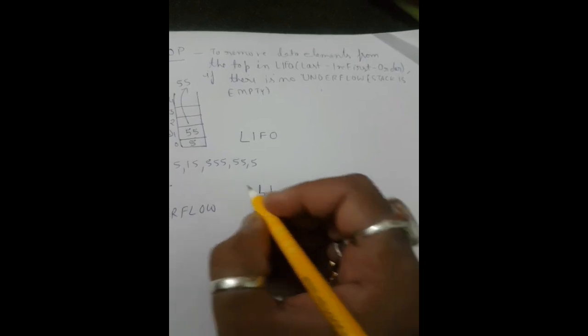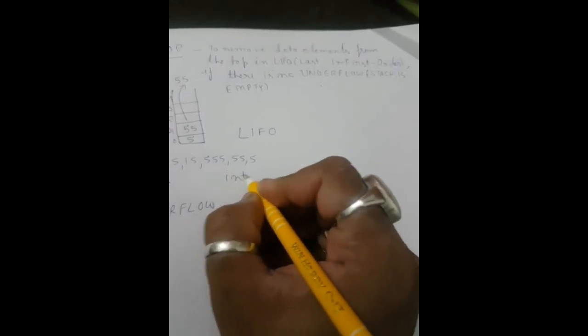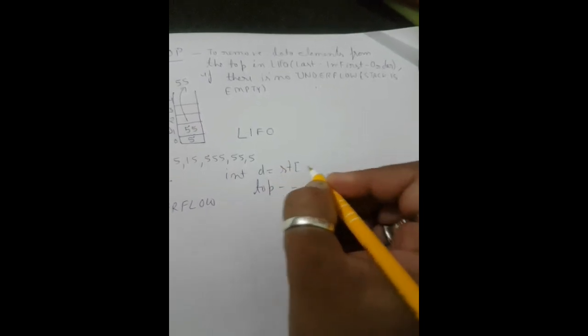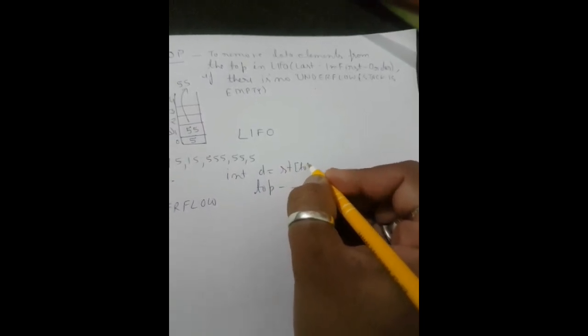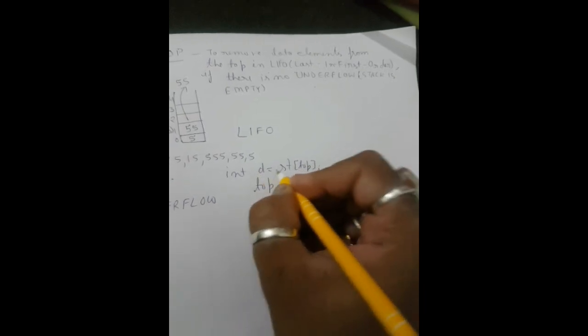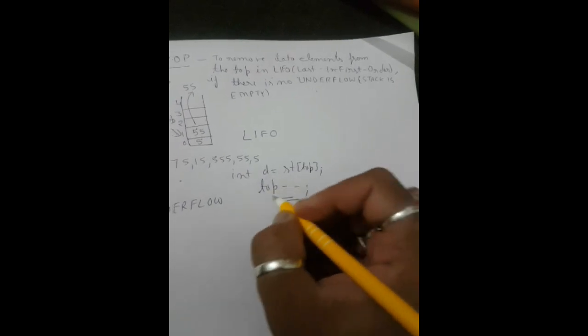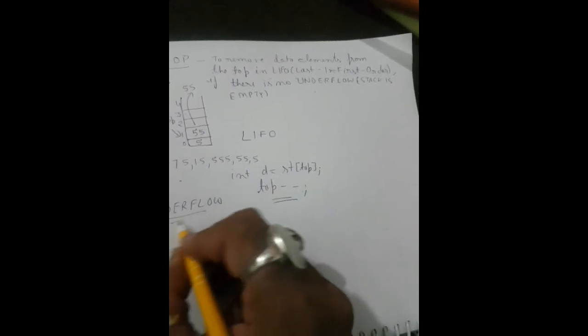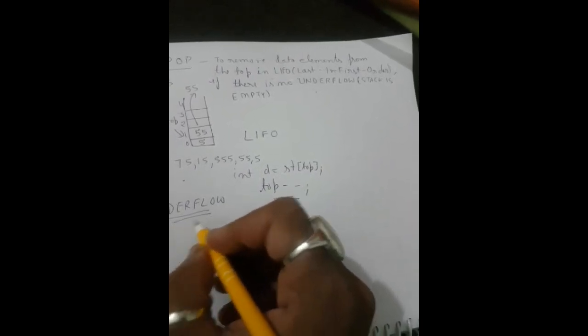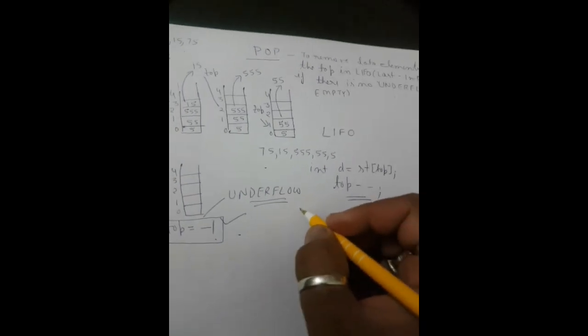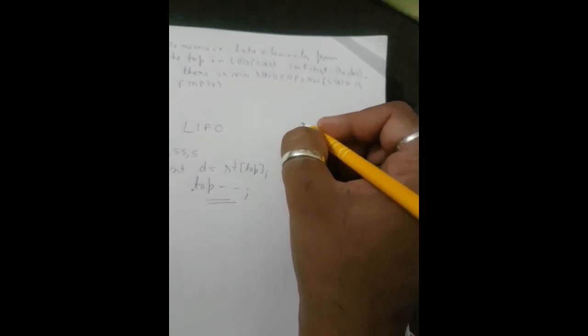Every time we pop a data element, we reduce the top by one. In push we increment top by one; in pop we decrement top by one. Before decrementing, we store the data being popped into variable d: d = st[top], then top--. This can only be performed when underflow is not present — underflow occurs when top equals minus 1.